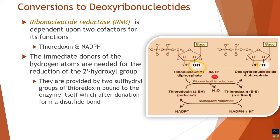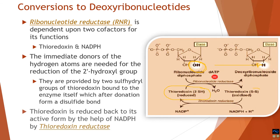Thioredoxin in its reduced form accepts electrons, becomes oxidized to form a disulfide bond, and a water molecule is released during the reaction. The oxidized thioredoxin is then replenished back to its reduced form with the help of NADPH donated by the HMP shunt. This represents an interdependence between ribonucleotide reductase and thioredoxin reductase.